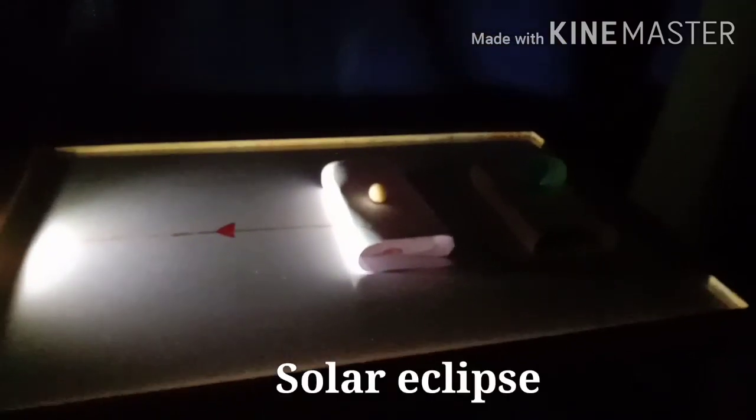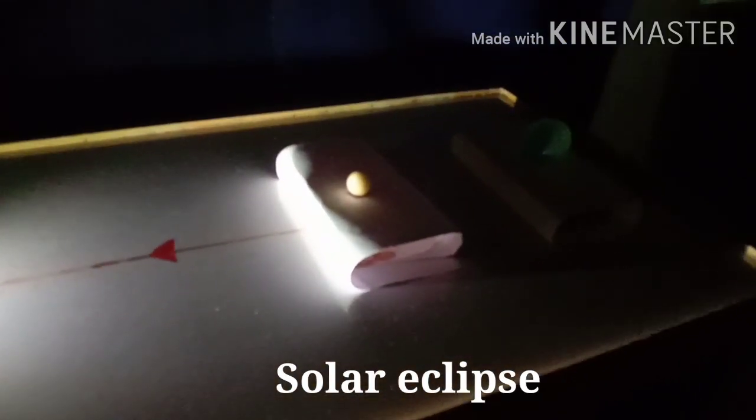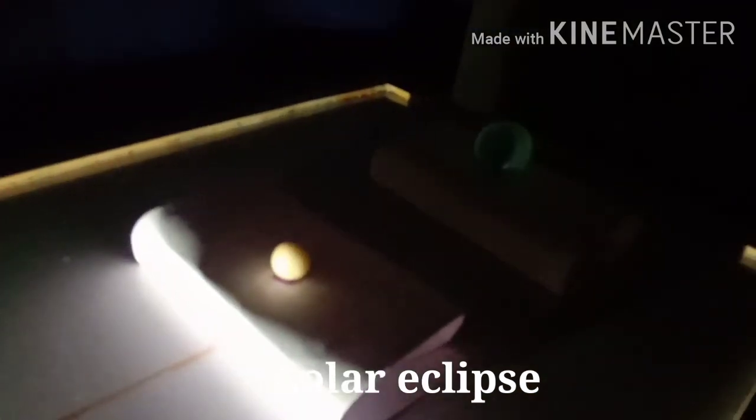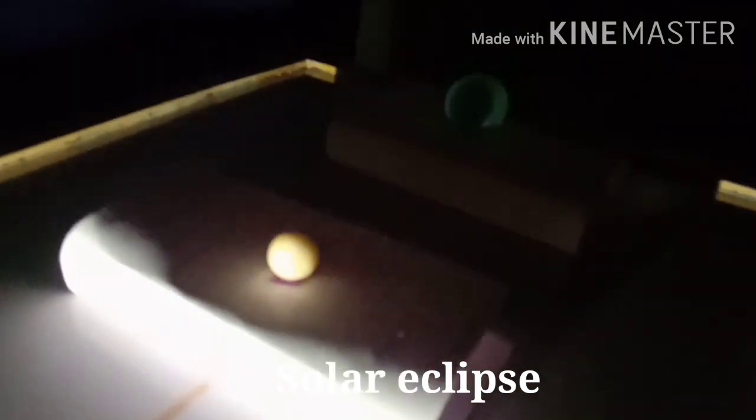If the Moon is between the Sun and the Earth, the shadow of the Moon falls on the Earth. At such a time, these three celestial objects are on the same plane and fall in one line.